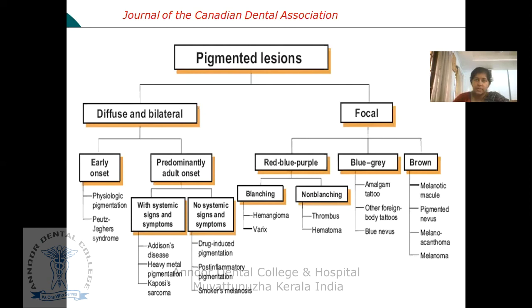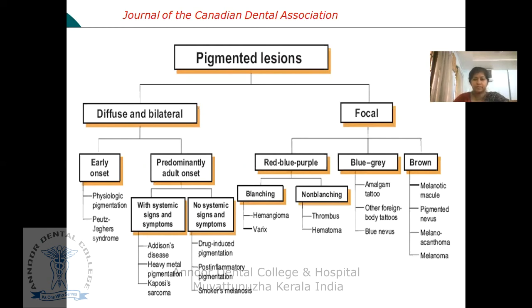With systemic signs and symptoms include Addison's disease, heavy metal pigmentation, and Kaposi's sarcoma. Without symptoms include drug-induced pigmentation, post-inflammatory pigmentation, and smoker's melanosis.